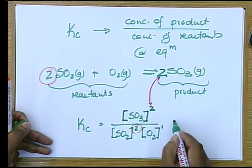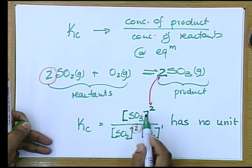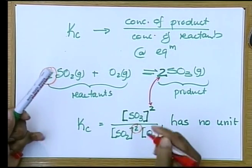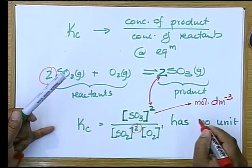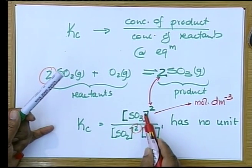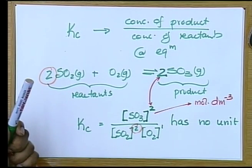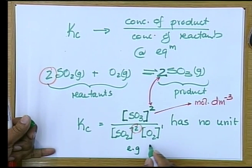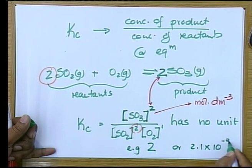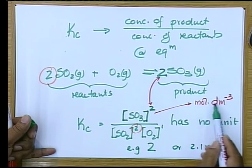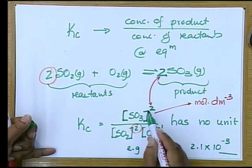Kc has no unit. We substitute concentration, which has a unit of mole per cubic decimetre. But after substitution, we see that Kc has no unit. You can say Kc is 2, or Kc is 2.1 times 10 to the negative 3, but don't put any units down, because mole per cubic decimetre is only applicable to the concentrations of the products and reactants.